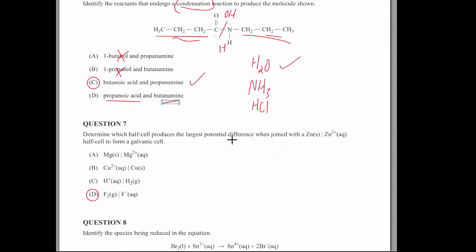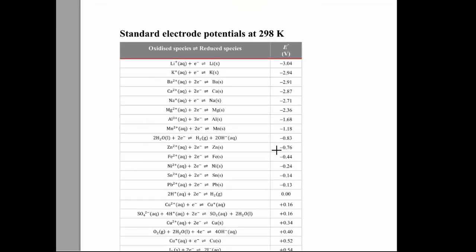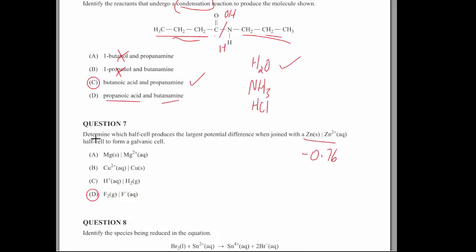Question seven, which is the largest potential when joined with the zinc. So we've got magnesium, hydrogen, fluorine and magnesium. So if we go to your data booklet, we've got zinc. You know, they're all, as long as they're all consistent, this is written in the opposite direction. As long as these are all consistent, we can write down those numbers, even though we probably should reverse the sign. Plus 2.89.